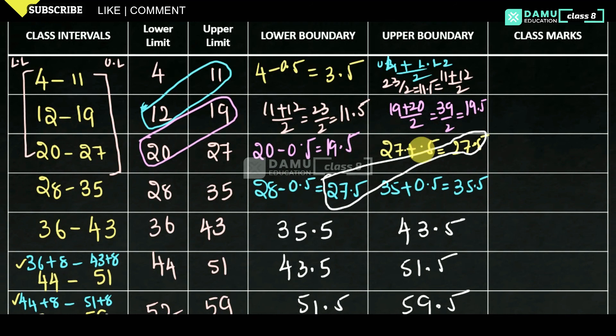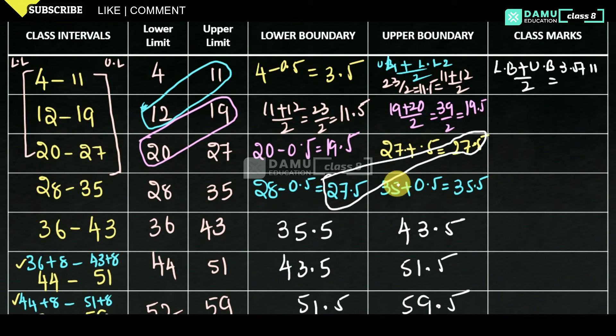Now calculate the class marks. The class mark is the average of the lower boundary and upper boundary divided by 2. For the first class: (3.5 + 11.5) / 2 = 15 / 2 = 7.5.